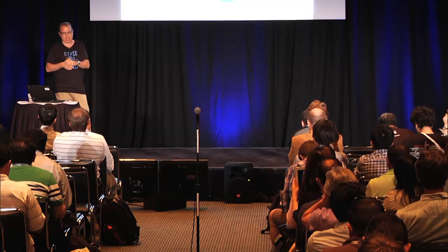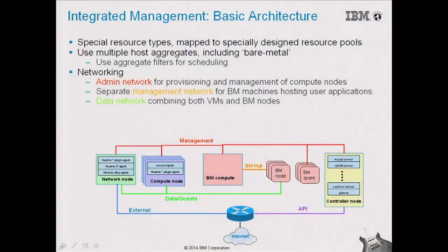We know that OpenStack can natively support virtual hosts, and especially lately it can handle bare metal support well. So why not both together? This is what we were focusing on: trying to come up with a single integrated management approach using a single instance of OpenStack. In general, the basic architecture uses special resource types mapped to resource pools, and in terms of scheduling we use multiple host aggregates — specifically bare metal aggregate and host aggregate filters. In addition to the regular administrator network, we also use a separate management network dedicated for bare metal machines.